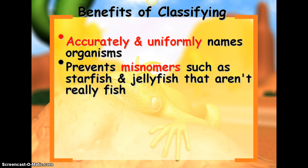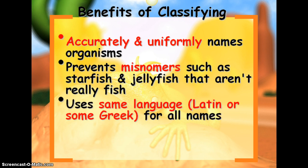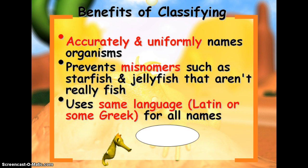Classification helps prevent misnaming, like starfish and jellyfish that aren't really fish. It also uses the same language, so for people that speak different languages, this puts it all into one scientific name using Latin or Greek, so that everyone, no matter what language they speak, can identify the organism. Here's our example — a seahorse, which is not actually a horse, as a misnomer.